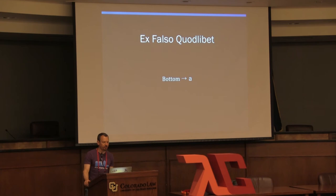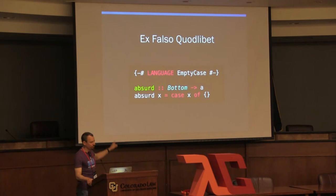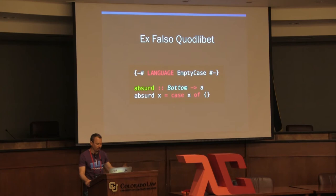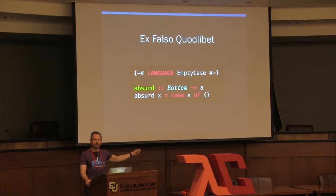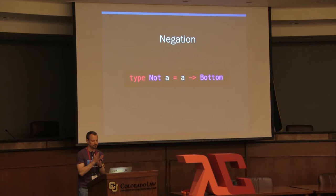Ex falso quodlibet — from false, anything. For this one I'll use the EmptyCase language extension. We can have an 'absurd' function from Void to any type A. This function is sound because Void is uninhabited, so the function can never actually be called. The case statement here is exhaustive — it handles all the constructors of Void, all zero of them. So absurd is a total function, trivially.